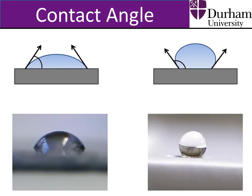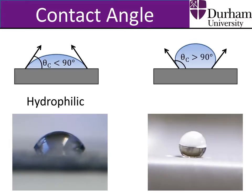If the contact angle of a water droplet on a surface is less than 90 degrees, the surface is known as hydrophilic. If the contact angle of a water droplet is greater than 90 degrees, the surface is known as hydrophobic.